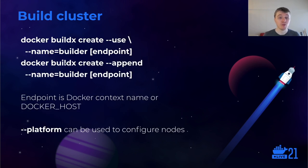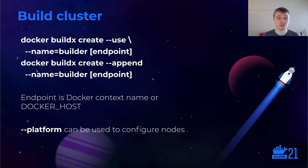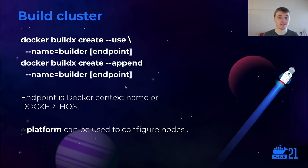Building this build cluster is very similar to the command we saw before — it's still docker buildx create. If you want to add a second node, you run the create command again with the same builder name and use --append. Instead of creating a new builder instance, this adds a new node to your existing builder instance.